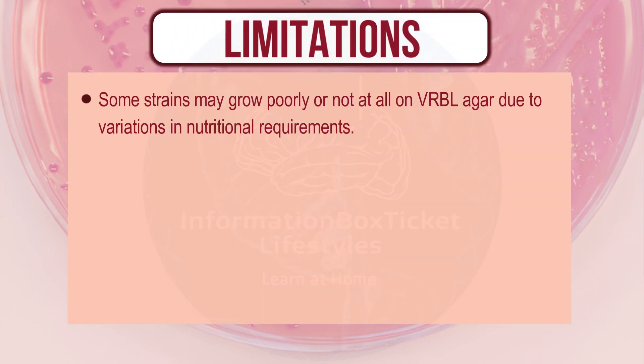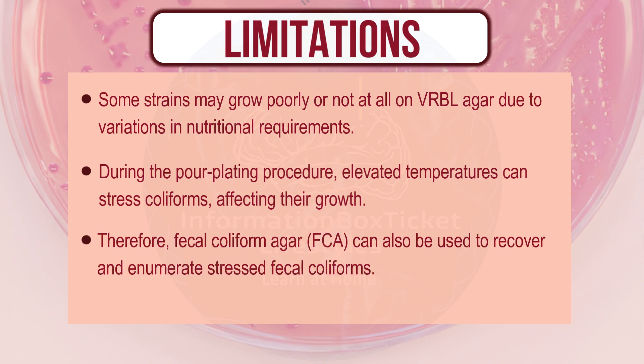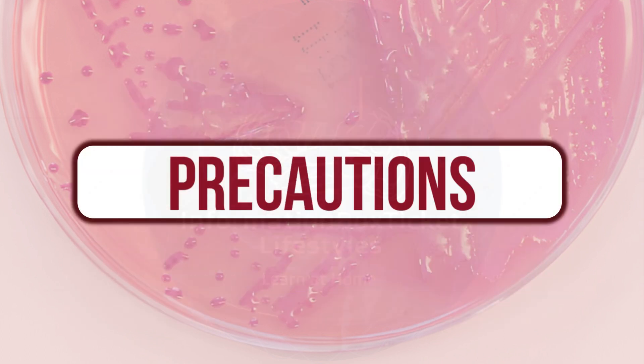Limitations of VRBL media: Some strains may grow poorly or not at all on VRBL agar due to variations in nutritional requirements. During the pour plating procedure, elevated temperatures can stress coliforms, affecting their growth. Therefore, fecal coliform agar (FCA) can also be used to recover and enumerate stressed fecal coliforms.